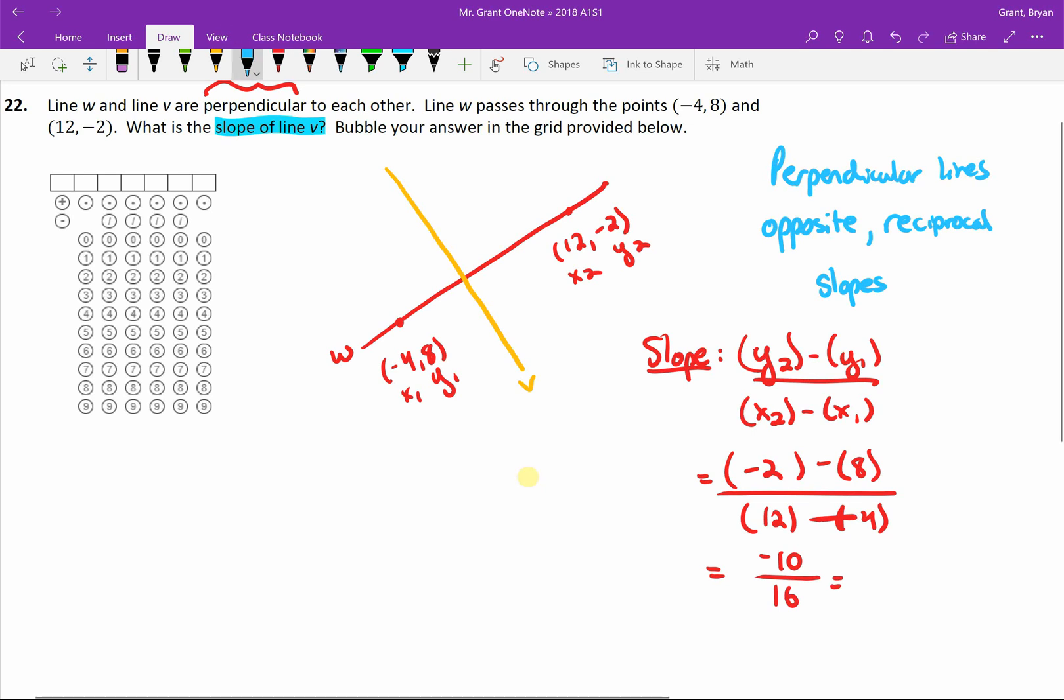And then we simplify. I think looking at 10 and 16, we can probably divide a 2 out of both of those. That's going to give me -5/8. So I know that the slope of line W is -5/8.